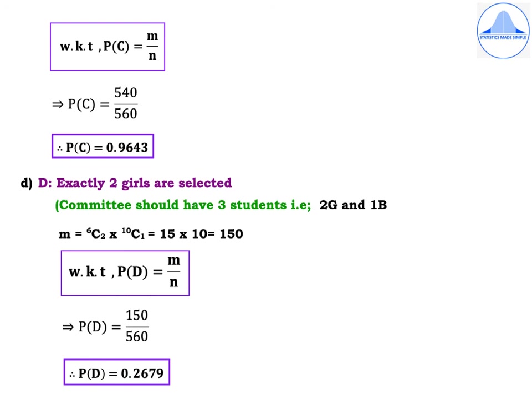Subdivision D. Define event D as exactly 2 girls are selected. The committee should have 3 students, so 2 girls and the other student should be a boy — 2 girls and 1 boy, and the word AND means multiplication. M = 6C2 into 10C1 = 15 into 10 = 150. P(D) = M by N = 150 divided by 560. Therefore, P(D) = 0.2679.